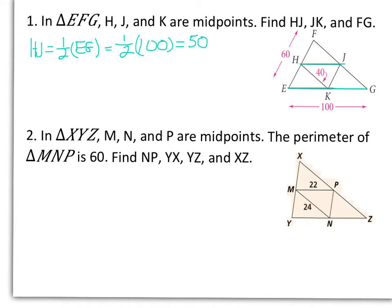Then we see that JK is parallel to EF, so that means that it is half its length. So JK will be equal to half the length of EF, which is half of 60, or 30.